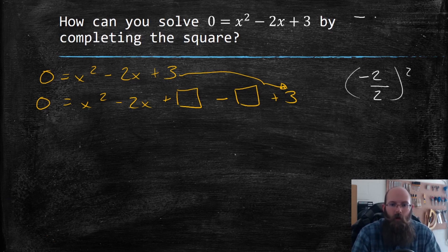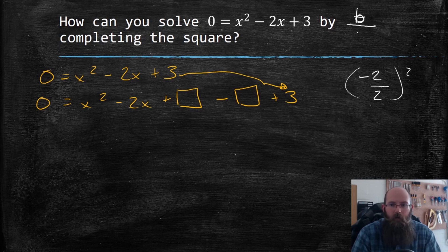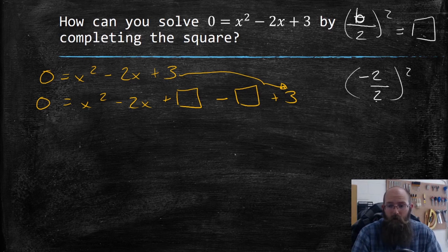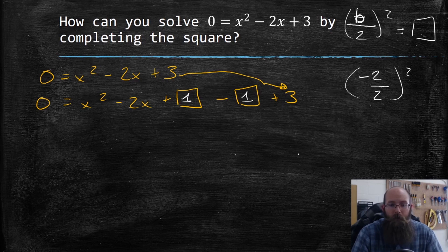So again, that's my B value, whatever it is, divide it by two, and then I'm going to square it. That's going to give me whatever goes in my box equals the numbers on my box. Negative two divided by two, once turned on negative two divided by two is just negative one. I square that and I get a normal one. So I'm going to put a positive one in both these boxes. You notice I'm adding a one and subtracting one, so we're all fine.